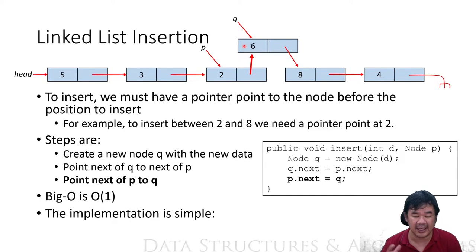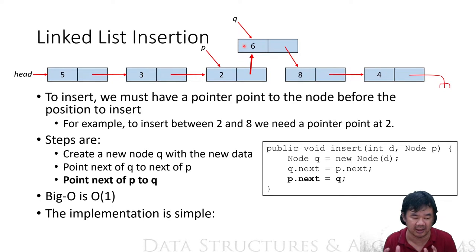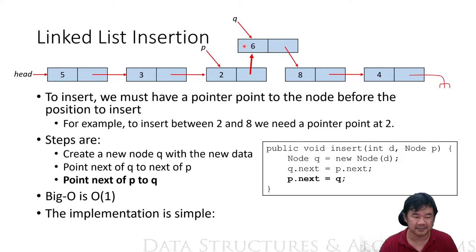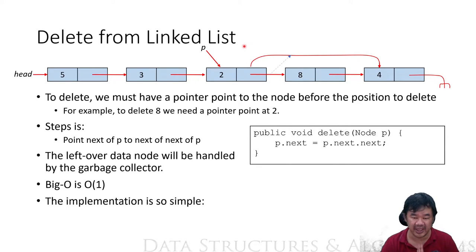This operation is O(1) because you do everything locally — no matter how long the linked list is. To delete, this is also a problem: you cannot delete this 8 if you only have a pointer pointing to this 8.